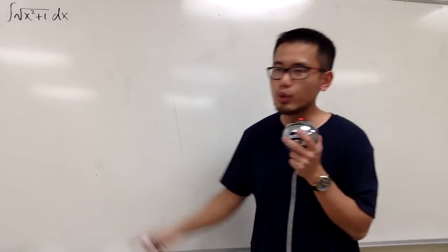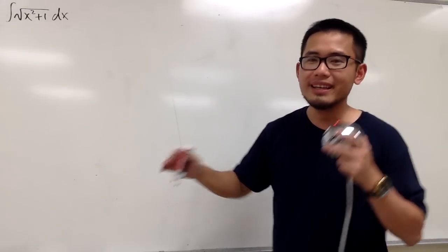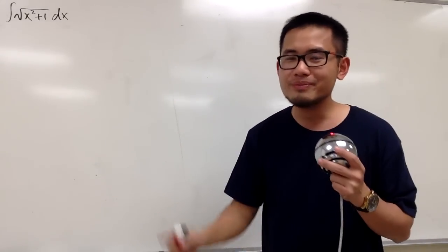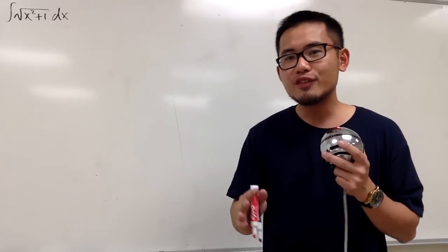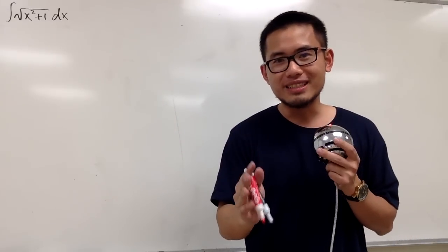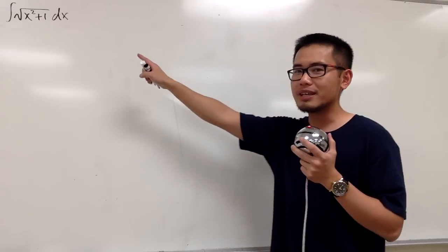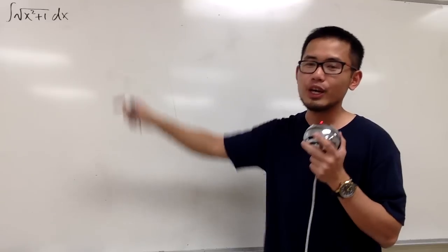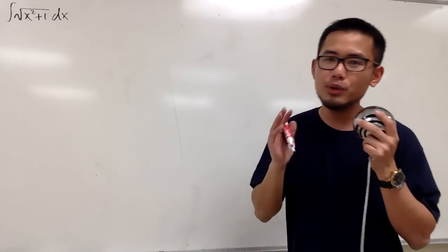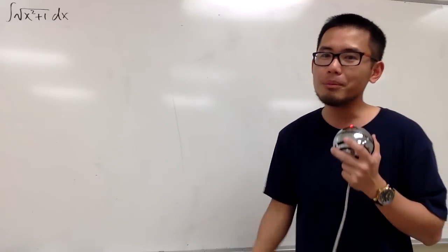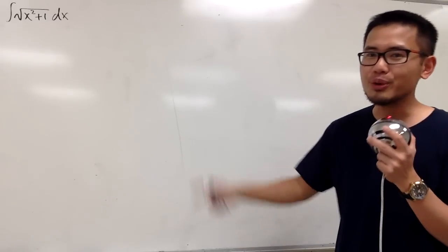I'm going to show you guys how to integrate the square root of x squared plus 1. As we know, we can do this by trig substitution, but in this video I will show you how to do this with what we call Euler's substitution. Maybe you haven't seen this before, because this is going to be really cool.